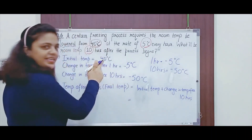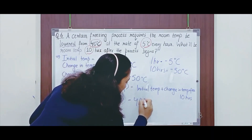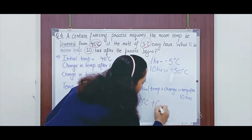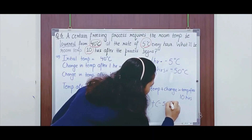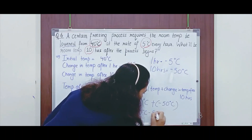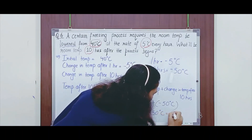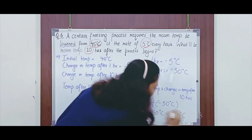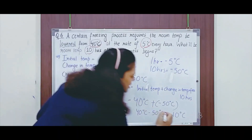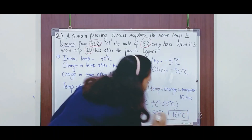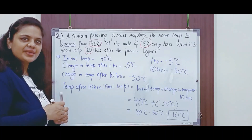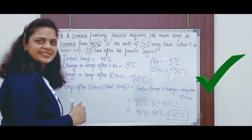The initial temperature is given as 40 degrees Celsius, so it is 40 degrees Celsius plus the change in temperature, which is minus 50 — I will enclose it in brackets. Now, plus minus is minus, so it would be 40 degrees Celsius minus 50 degrees Celsius. 50 minus 40 is 10, but since plus minus is always minus and the sign of the bigger integer carries, it would be minus 10 degrees Celsius. So, the room temperature 10 hours after the process begins is minus 10 degrees Celsius.